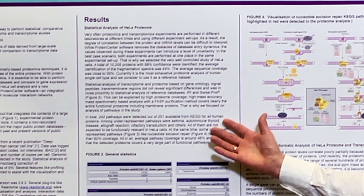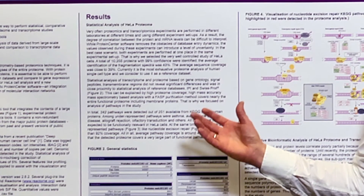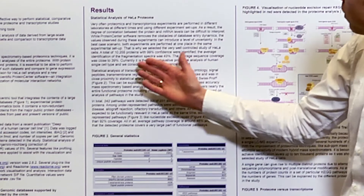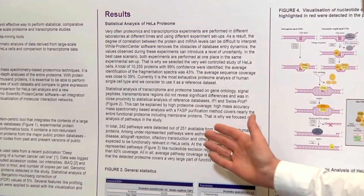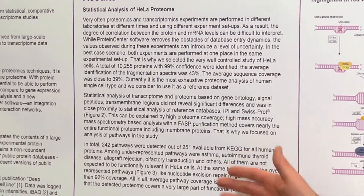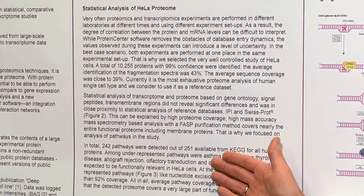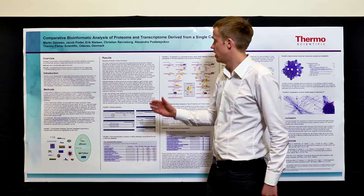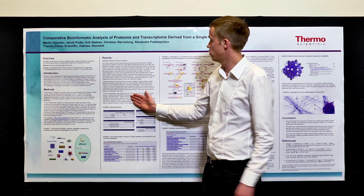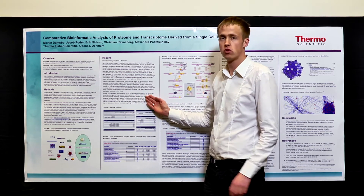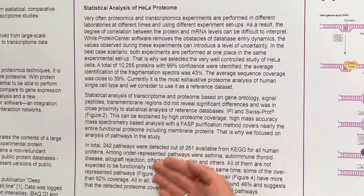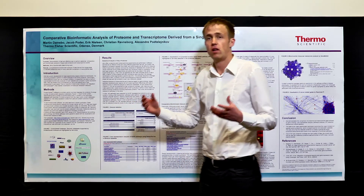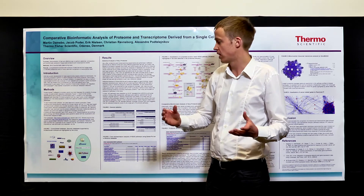The first results section describes the characterization of the HeLa proteome. As you can see, they analyzed over 10,000 proteins. We tried to find out how many pathways that actually covered in the HeLa cell line — meaning functionally, did we cover the full cell line. Out of the 251 pathways described in the human KEGG database, we identified proteins for 242, giving us a reasonable, well-rounded functional description of the human cell line.